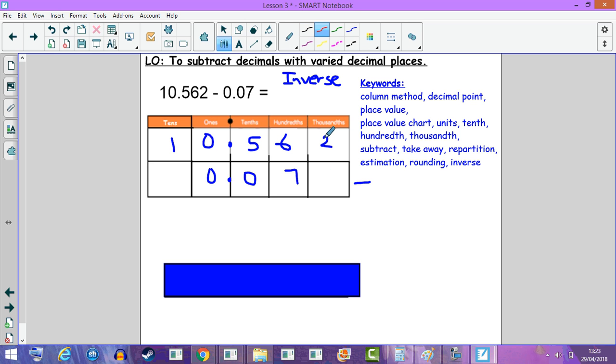We're going to start with the right-hand column. 2 thousandths take away 0 thousandths is 2. 6 hundredths take away 7 hundredths we cannot do because 7 is too large, so we're going to repartition. 5 tenths becomes 4 tenths, and here we have 16 hundredths. 16 hundredths take away 7 hundredths is 9 hundredths. 4 tenths take away 0 tenths is 4 tenths. 0 ones take away 0 ones is 0, and 1 ten take away 0 tens is 1 ten.